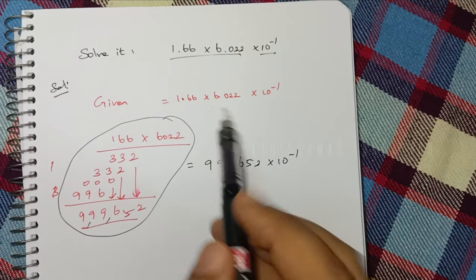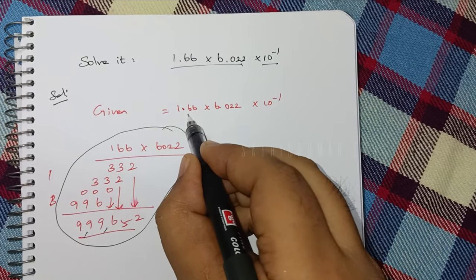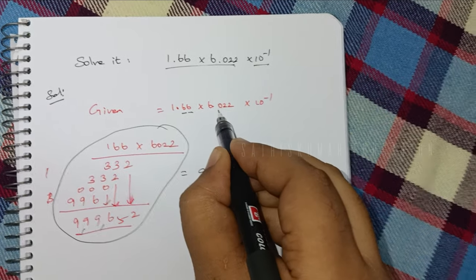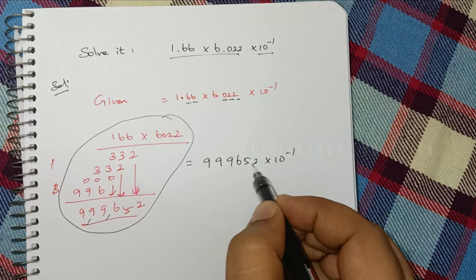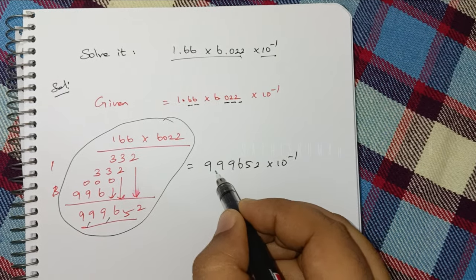Here we have decimals. How many decimal places? 1, 2, 3, 4, 5. So you will find 5 digits: 1, 2, 3, 4, 5.